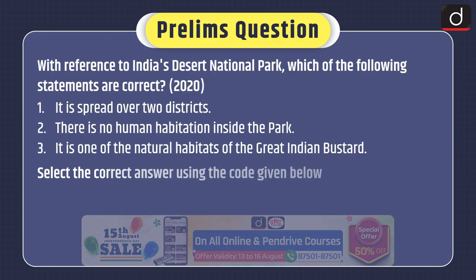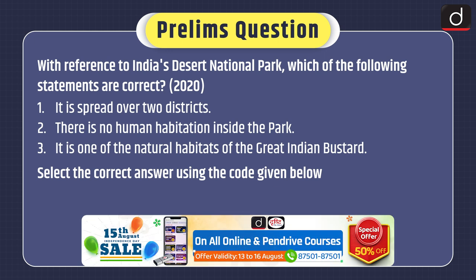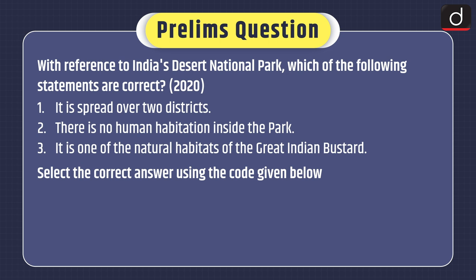Now it's time for the practice questions. First, the prelims question: With reference to India's Desert National Park, which of the following statements are correct? 1. It is spread over two districts. 2. There is no human habitation inside the park. 3. It is one of the natural habitats of the Great Indian Bustard.